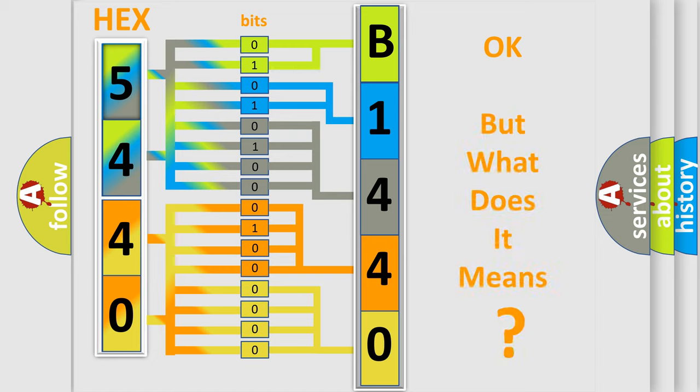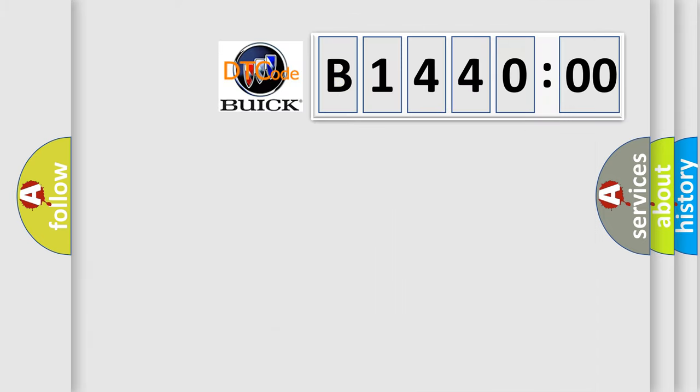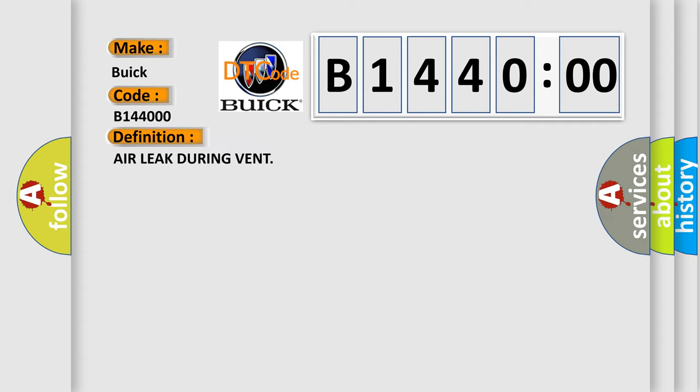The number itself does not make sense to us if we cannot assign information about what it actually expresses. So, what does the diagnostic trouble code B144000 interpret specifically for Buick car manufacturers? The basic definition is: Air leak during vent.